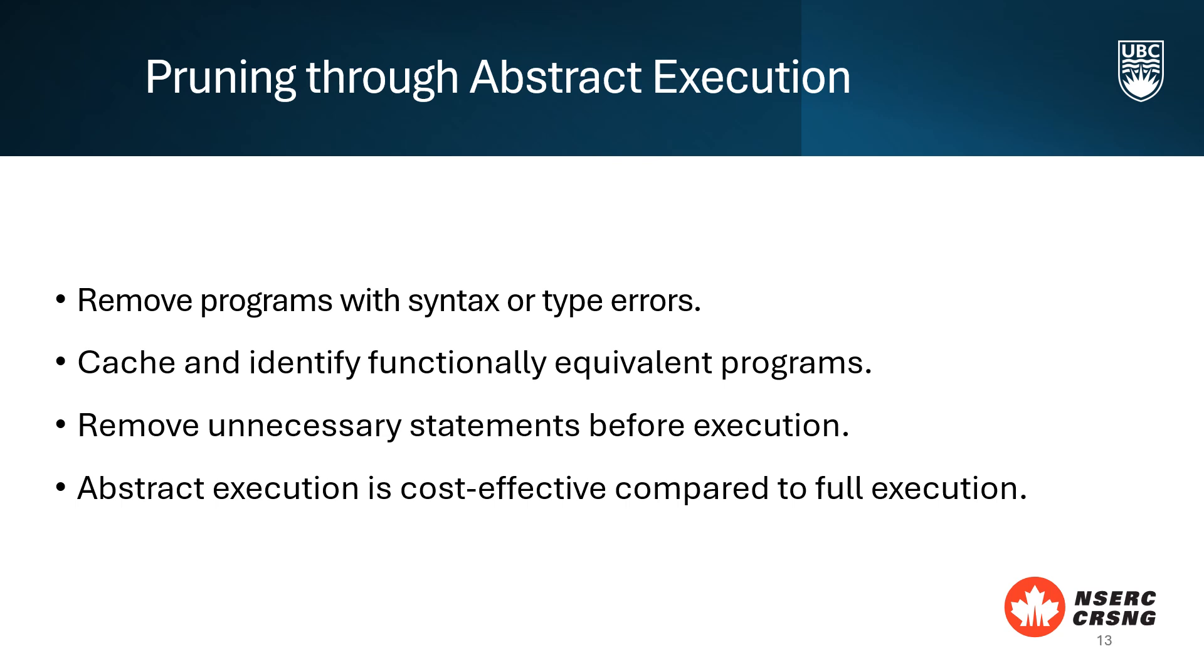Next, we use a unique hashing system to identify and eliminate functionally equivalent programs. This means that if two programs produce the same results, we only keep one, reducing redundancy. Finally, we trim down redundant statements. By recognizing and ignoring these during execution, we streamline the process and save valuable resources. Abstract execution is lightweight compared to actual execution, making it a powerful tool for avoiding pitfalls and ensuring our search space remains smooth and effective.